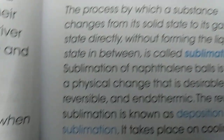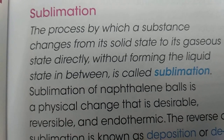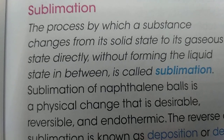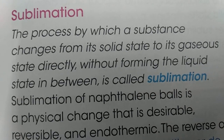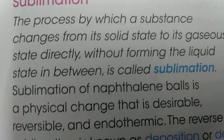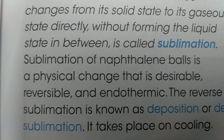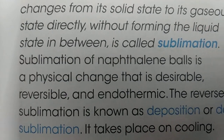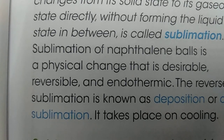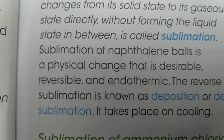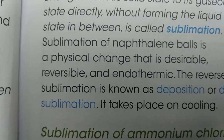Next comes sublimation. What is sublimation? It means when a substance changes from its solid form to its gaseous form directly without changing it into liquid. Example of sublimation will be naphthalene — also in Hindi we call it kapur. If you keep it open, it just goes away. That is known as sublimation.